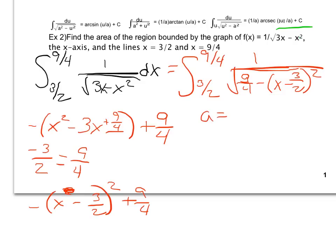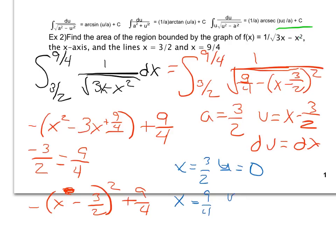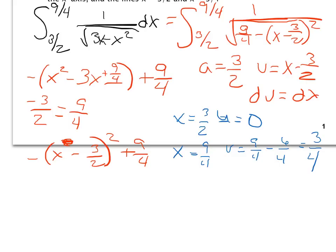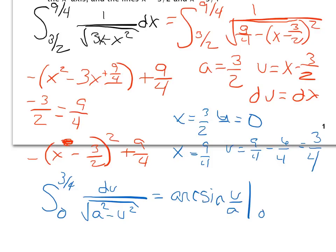So writing that out, a is going to be the square root of 9 over 4, so 3 over 2. u is x minus 3 over 2. du is just dx, or it's just 1. Also, as long as I'm changing all this, I'm going to go ahead and change my limits as well. So I'm going to say that when x is 3 over 2, u is 3 over 2 minus 3 over 2, so u is 0, and when x is 9 over 4, u is 9 over 4 minus 3 over 2, which is the same thing as 6 over 4, which gives me 3 over 4. So I'm going to go ahead from 0 to 3 over 4 of du over the square root of a squared minus u squared, which is going to become arc sine of u over a from 0 to 3 over 4.